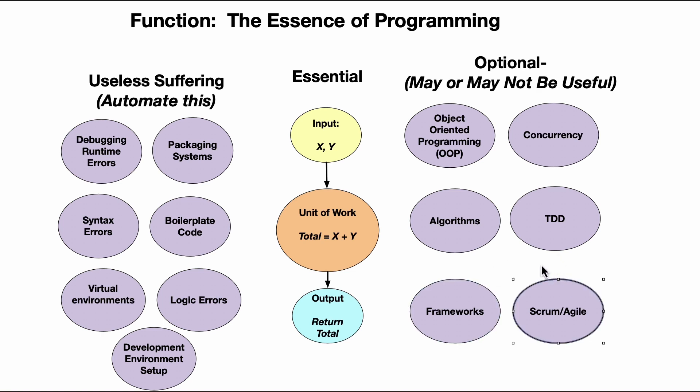Project management is another area: non-technical people often gravitate toward Scrum and Agile because certifications are easy to get, and then they push these agendas on developers. Developers can feel confused when they're not making progress, but the reality is the methodology itself may be flawed. It's important to identify constraints and focus on what matters: an input, a unit of work, and an output. Automate what you can, avoid optional things until you need them, and you can take a five-year shortcut in your career.